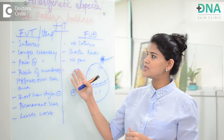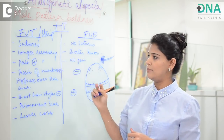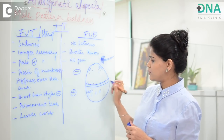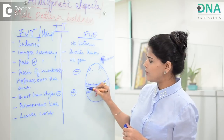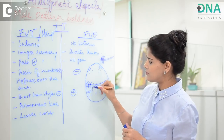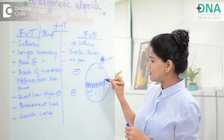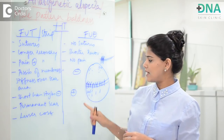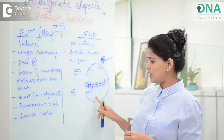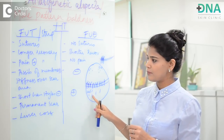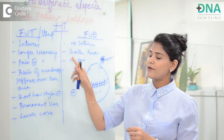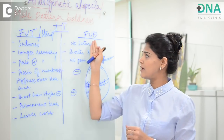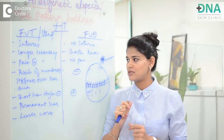Let's see the basic differences between FUT and FUE. In FUT, when we cut a strip from the back of the scalp, we need to approximate the skin using sutures. So sutures are present in the FUT method, while there are no sutures in FUE and the skin heals by itself. Because of sutures, FUT takes a longer time to recover, while in FUE, recovery is pretty much fast.